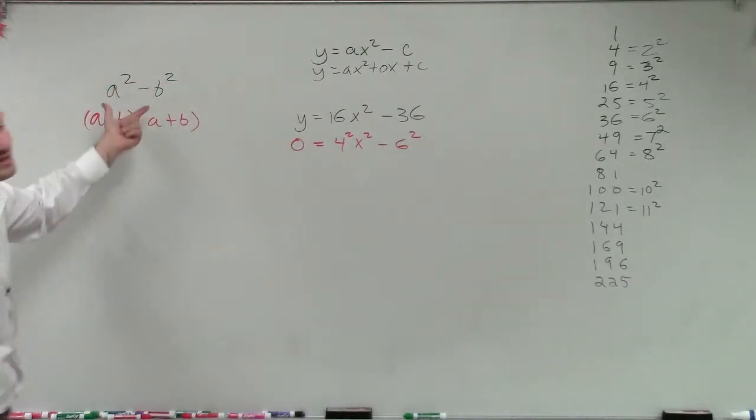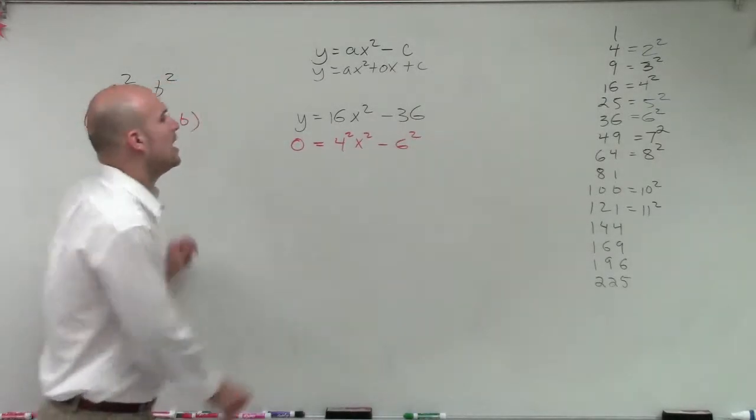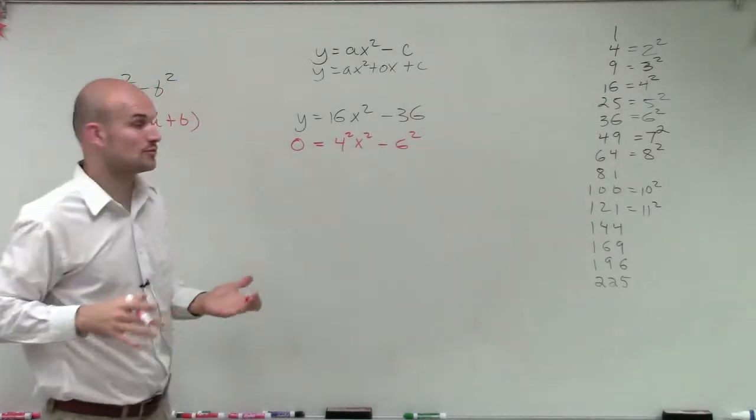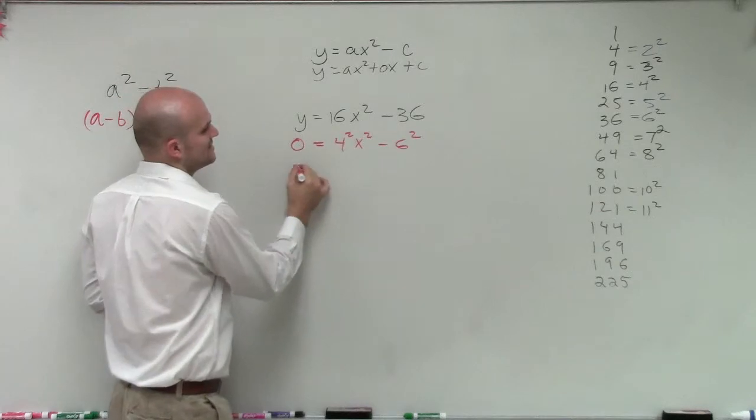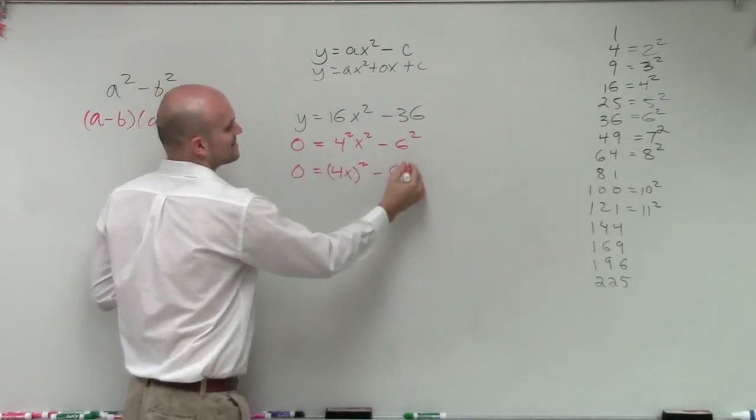Now, it still doesn't look exactly like this, right? I still don't have a term squared minus another term squared. However, by using the power of product rule, I can rewrite this as 0 equals 4x squared minus 6 squared.